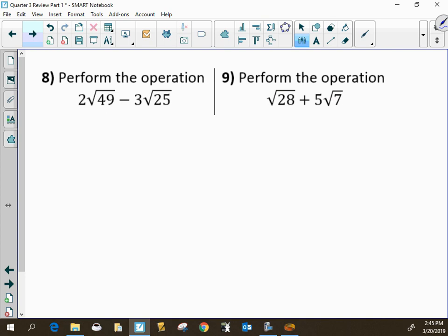All right. So this number 8 looks like it's a radical problem, but it's not. It's just 2 times 7 minus 3 times 5, because the square root of 49 is 7, and the square root of 25 is 5, and that's 14 minus 15 or negative 1.